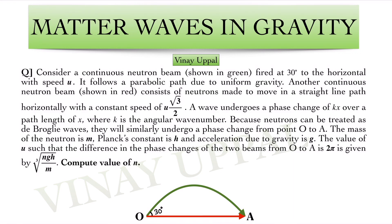Notice that I have purposely given the velocity of the red beam as u√3/2, so that means that both the beams have the same horizontal component of velocity. A wave undergoes a phase change of kx over a path length of x where k is the wave number. This is what we just saw previously. Because neutrons can be treated as de Broglie waves, they will similarly undergo a phase change from point O to A.